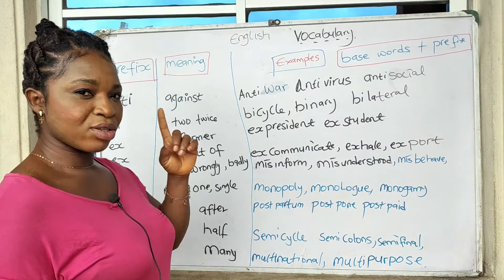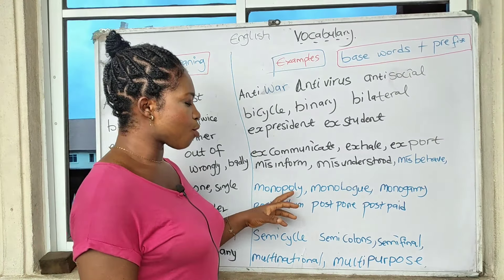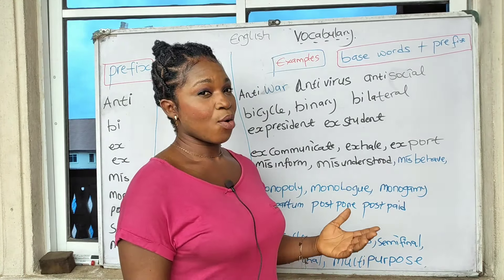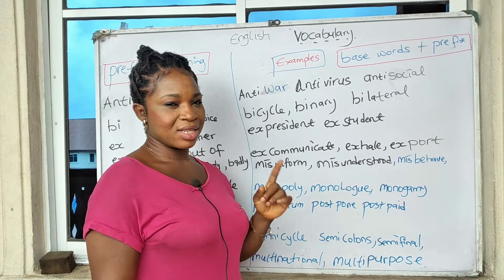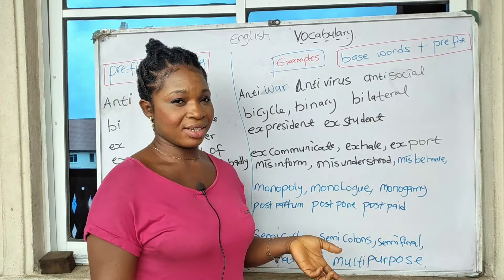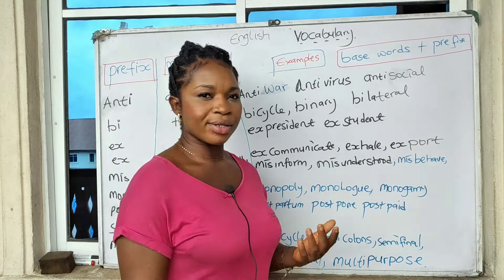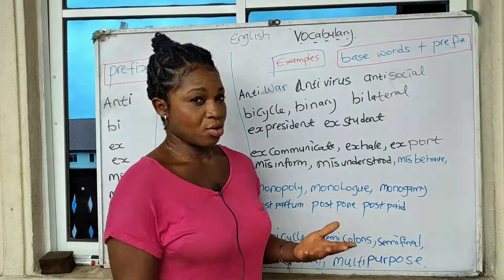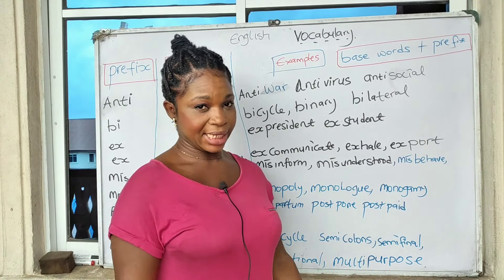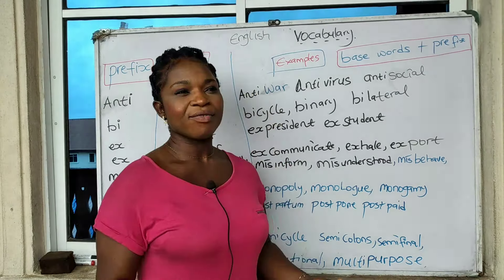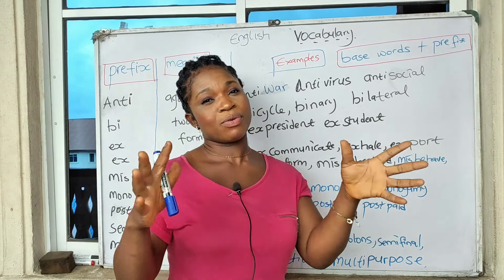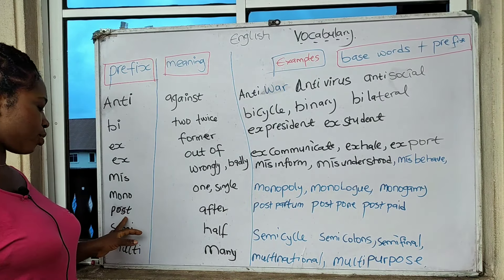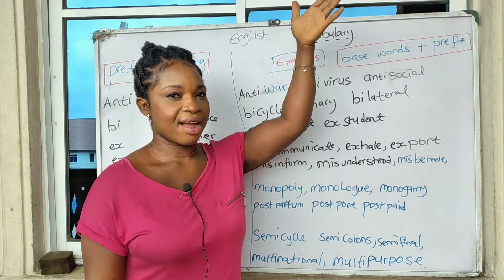'Mono' means one or single. 'Monopoly' means one particular source controls a market or production — when one person or market dominates, it is monopolized. 'Monologue' means talking to yourself alone, without talking to anybody. 'Monogamy' means being married to one person, as opposed to polygamy which involves multiple partners.